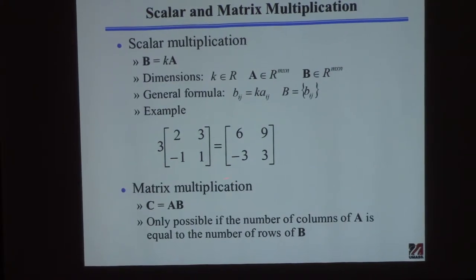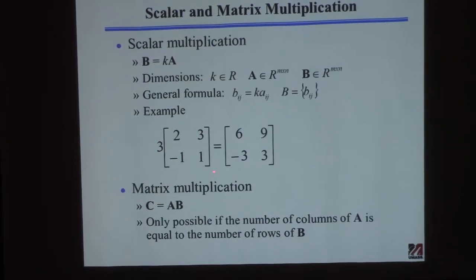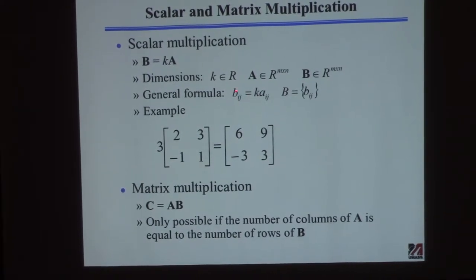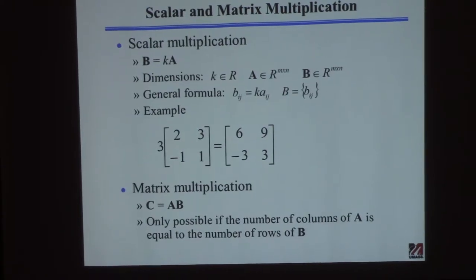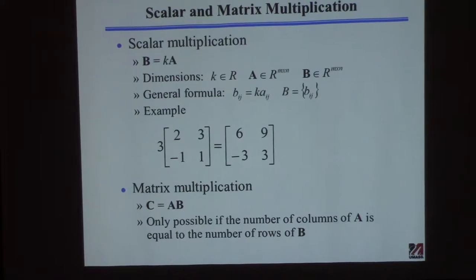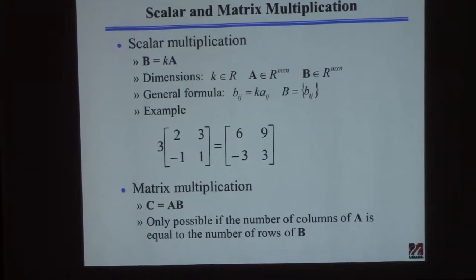The formal definition is preferred over just an example. The key notation — K belongs to R means K is real, A in R^(M×N) means A is a real matrix with M rows and N columns. It's very important when doing matrix algebra to keep track of how many rows and columns things have. In MATLAB, the upper right corner tells you the variable's dimension.